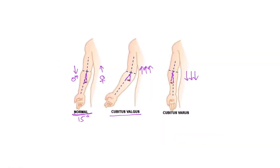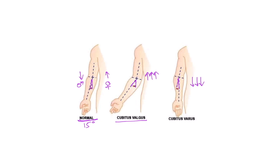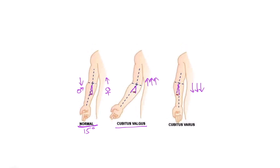Now look at this image to understand. Normally, the carrying angle is around 15 degrees, so the forearm is deviated laterally by around 15 degrees — less in males and more in females. If this angulation becomes more than the normal carrying angle, it is called cubitus valgus.